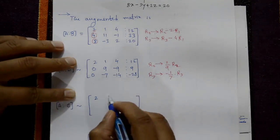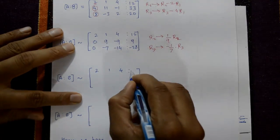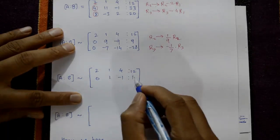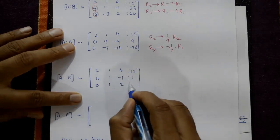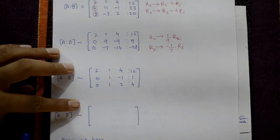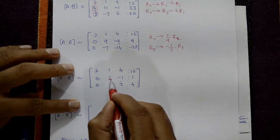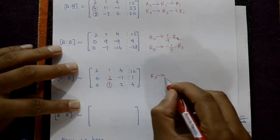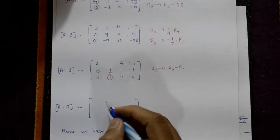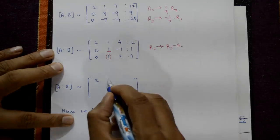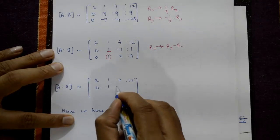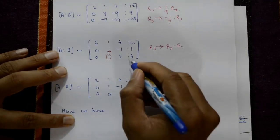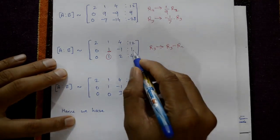After simplification, the first row remains 2, 1, 4, 12. The second row becomes 0, 1, minus 1, 1. The third row becomes 0, 1, 2, 4. The leading element in the second row is now 1; we make the element below it zero using R3 = R3 minus R2. This gives the third row as 0, 0, 3, and 4 minus 1 is 3.